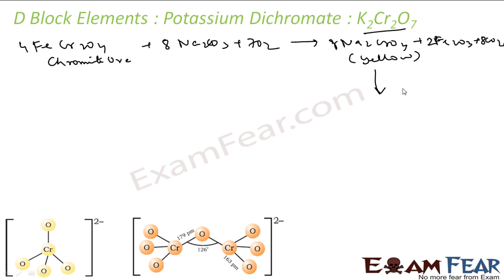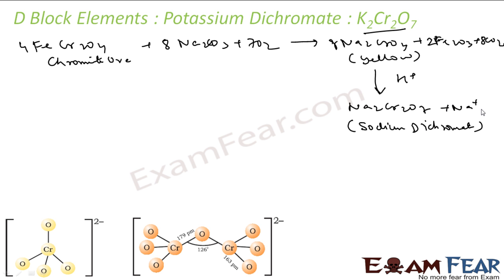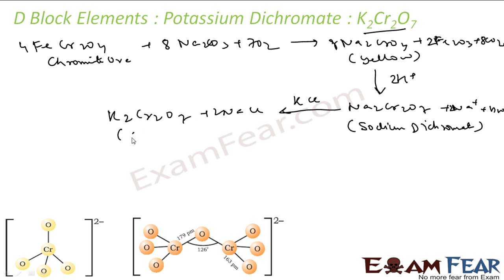You acidify the filtrate with sulfuric acid — adding H⁺ — and you get Na₂Cr₂O₇, which is called sodium dichromate, along with Na⁺ ions and water. Then you react sodium dichromate with KCl. Since sodium dichromate is more soluble, the reaction gives K₂Cr₂O₇ and sodium chloride. K₂Cr₂O₇ forms orange crystals that crystallize out, and you get potassium dichromate.